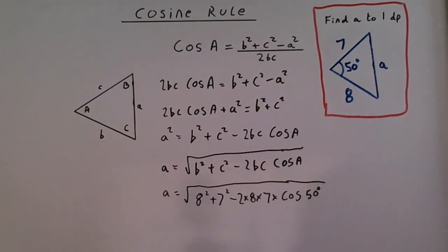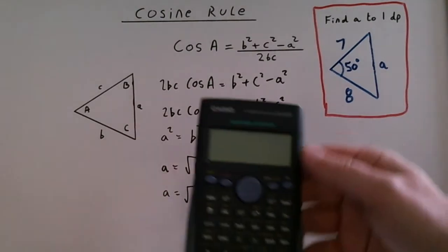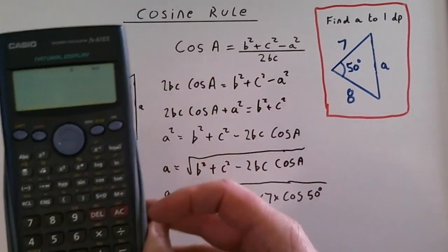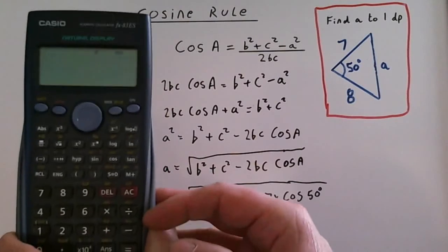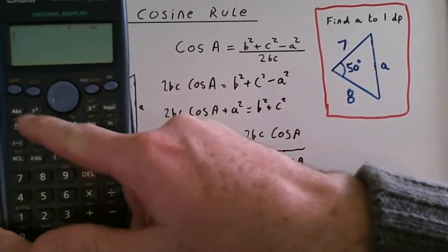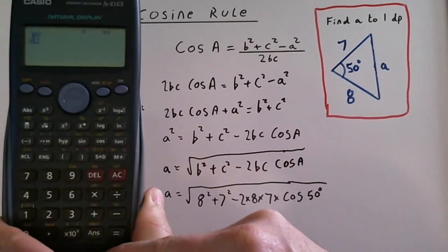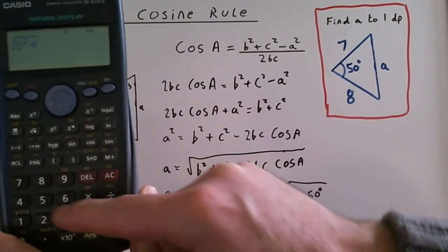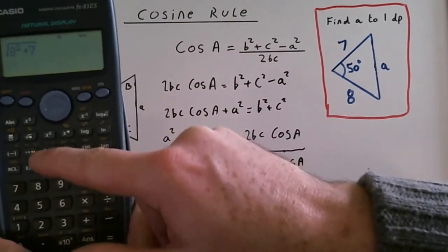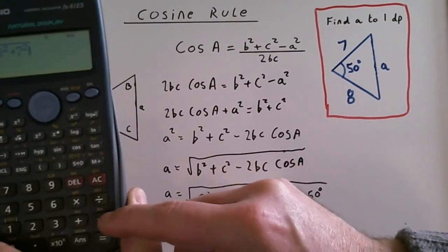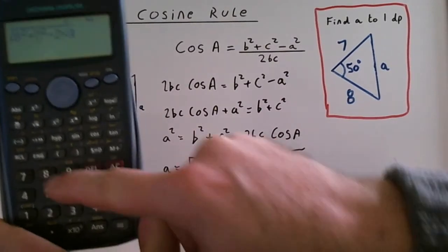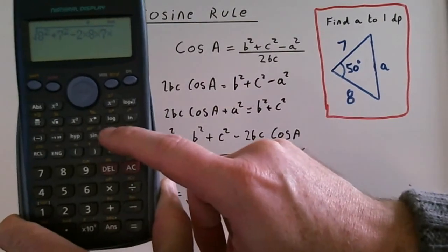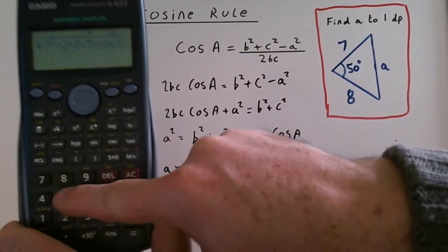Now I'll use the calculator. With this we can use the square root button to start with, and everything goes underneath that square root. So 8 squared plus 7 squared, minus 2 times 8 times 7 times the cosine—cosine of 50.